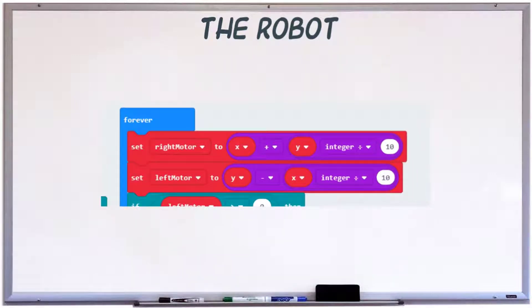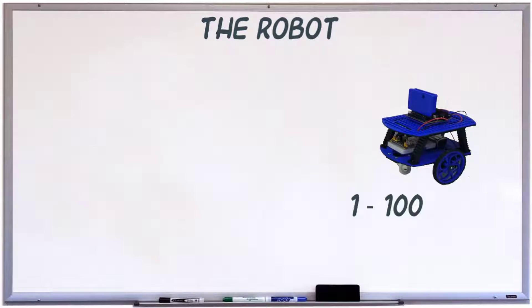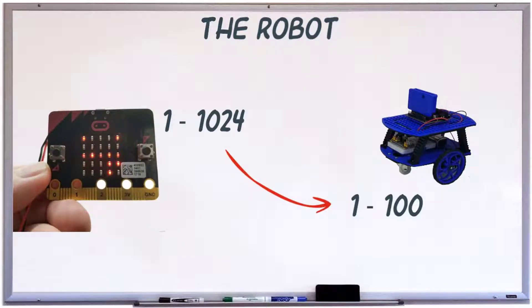Building on the forever loop we created in the last video, we're going to first divide the number coming from the remote's accelerometer by 10. This is because the motor has a range of 0 to 100 and the accelerometer range is 0 to 1024.